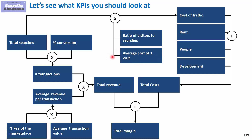The more visitors are converted to searches, the fewer visits you need to generate a given level of revenue. The average cost of one visit is crucial as well. You should also consider the average transaction value — if you increase the basket of services bought by the patient from the doctor, revenues increase accordingly. So the key KPIs are: total searches, conversion rate, visitor-to-search ratio, average cost per visit, and average transaction value.